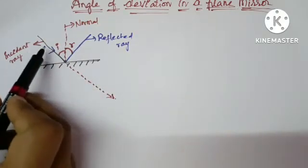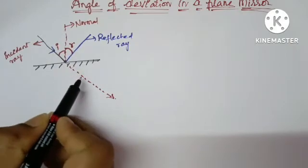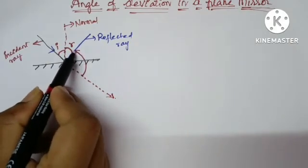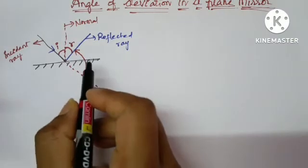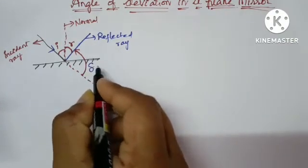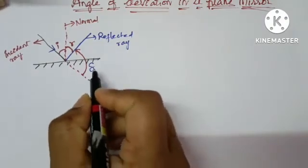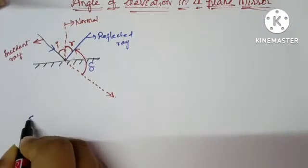Due to this plane mirror, this ray was deviated into this direction. So that this angle is called angle of deviation and it is denoted with the letter delta. Let us see how to calculate angle of deviation.